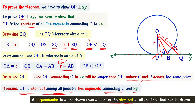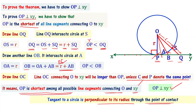The perpendicular line drawn from a point is the shortest of all lines that can be drawn. OP is the shortest among all lines OA, OB, OC from O to line XY. Therefore OP is perpendicular to line XY. This means the tangent to a circle is perpendicular to its radius through the point of contact P. Thus the theorem is proved.